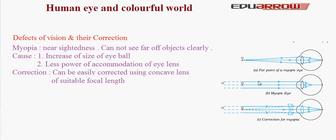The far point of a myopic eye is closer than infinity, whereas the actual far point should be at infinity. Another reason is less power of accommodation of the eye lens — when the eye lens cannot accommodate properly, the image of the object cannot be properly formed. Correction of myopia: myopia can be easily corrected by using a concave lens of suitable focal length. The rays coming from infinity first diverge by the help of the concave lens and then converge on the retina so that a clear image is formed.